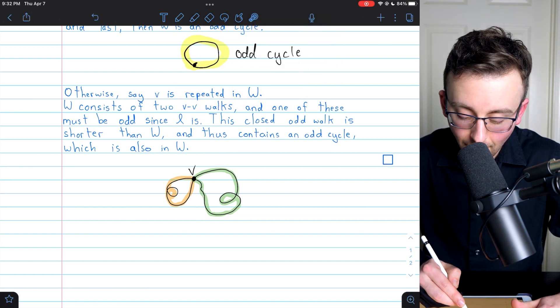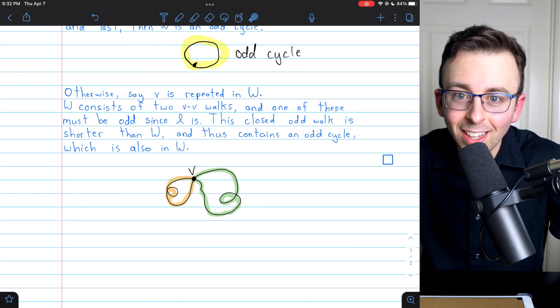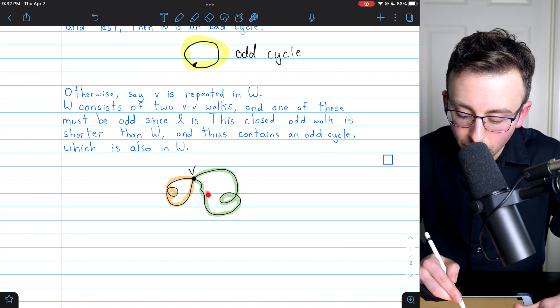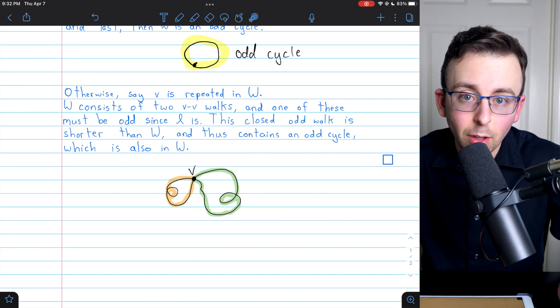W consists of these two walks, and W is odd. So the only way that's going to happen is if one of these VV walks that makes W up is itself odd.